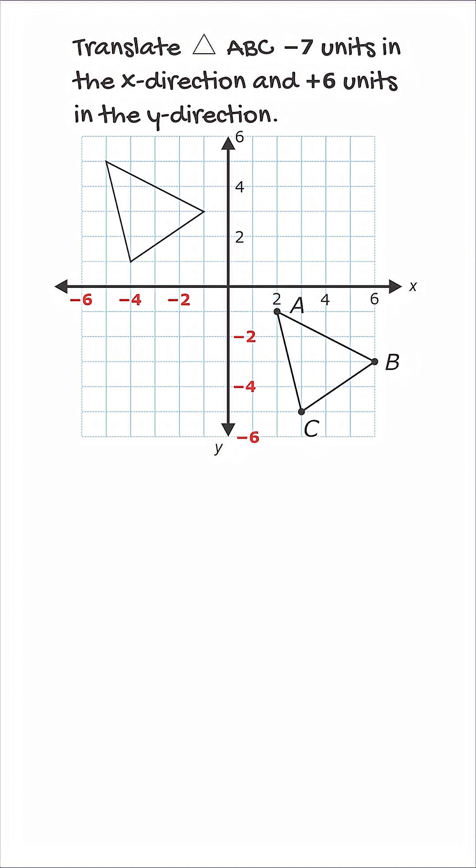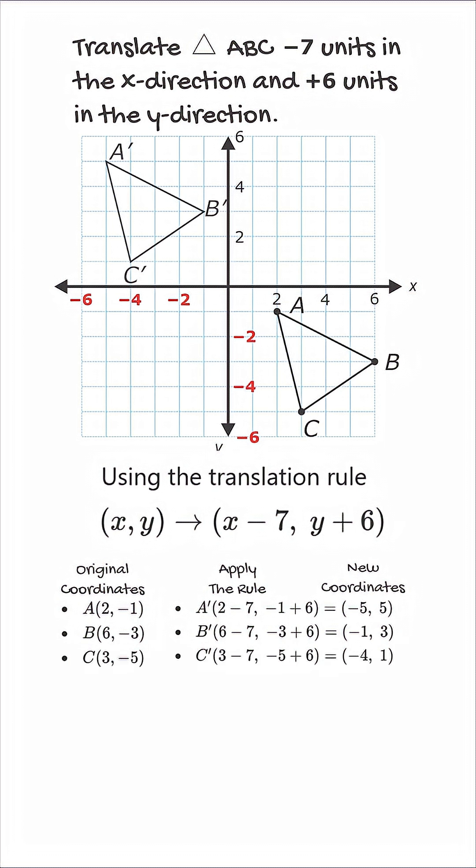After both slides, left 7 and then up 6, we've completed the translation. Now, instead of visually sliding the shape, we could have used the coordinate rule for our translation of minus 7 in the x direction and positive 6 in the y direction.